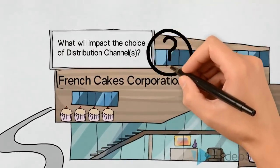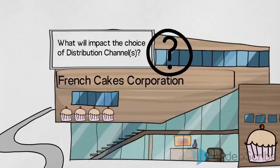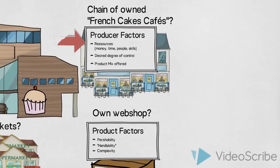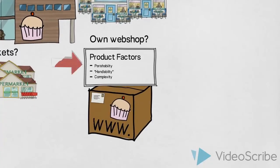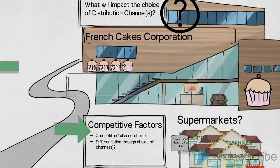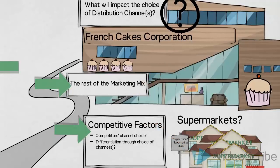So when advising the company on their choice of distribution channels, we would look at some market factors, some factors about the French Cakes Corporation itself, factors about the products, and some factors in connection with a competitive situation. And finally, we would look at the rest of the marketing mix to ensure that the choice of place corresponds with how French Cakes Corporation wishes to be positioned in the minds of the customers.